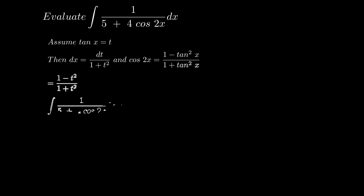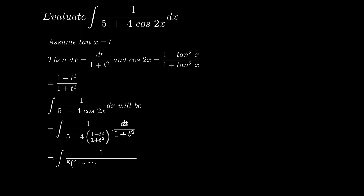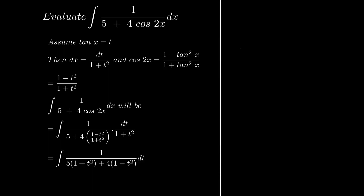If we place this into the actual problem, we get the integration of 1 by 5 plus 4 multiplied by 1 minus t squared by 1 plus t squared, and dt by 1 plus t squared. This will be equal to the integration of dt by 5 multiplied by 1 plus t squared plus 4 multiplied by 1 minus t squared. Further simplification gives integration of dt by 9 plus t squared.